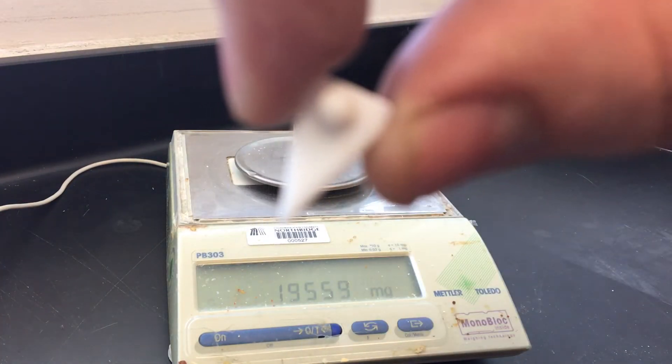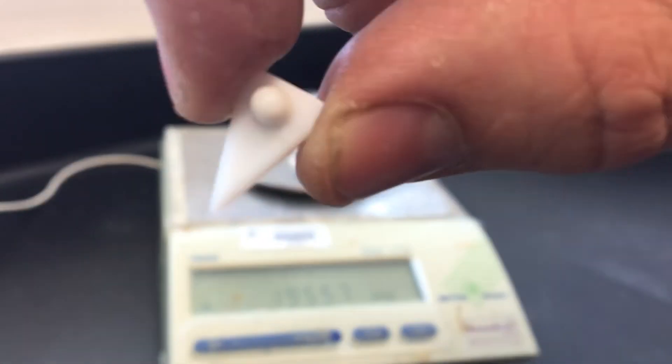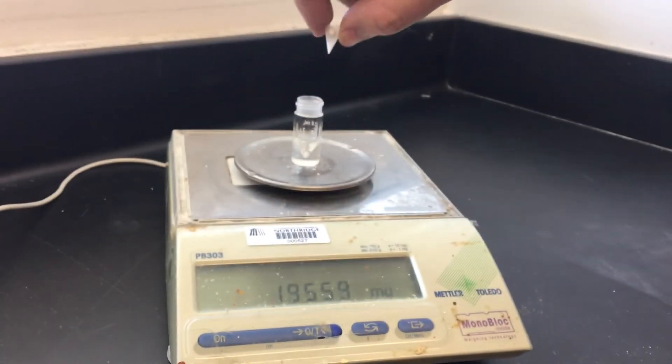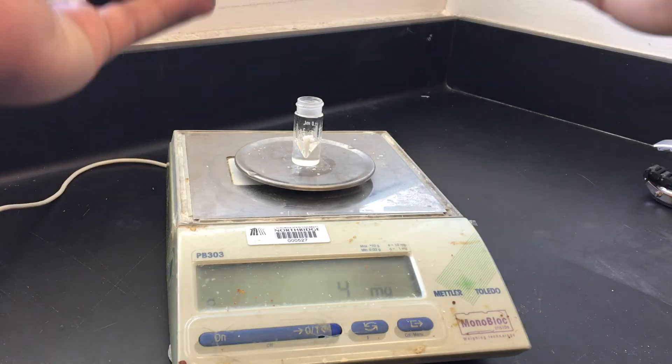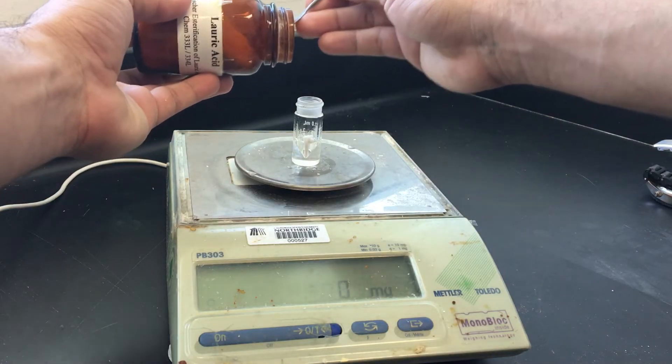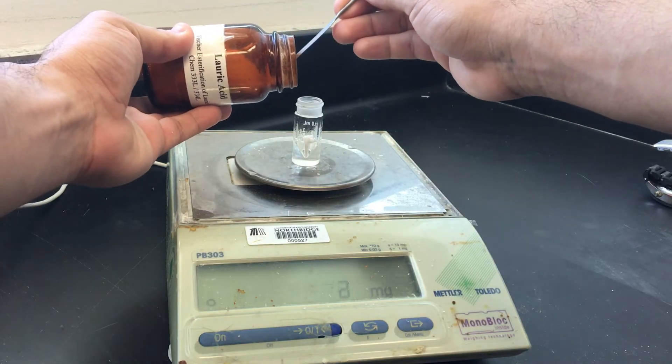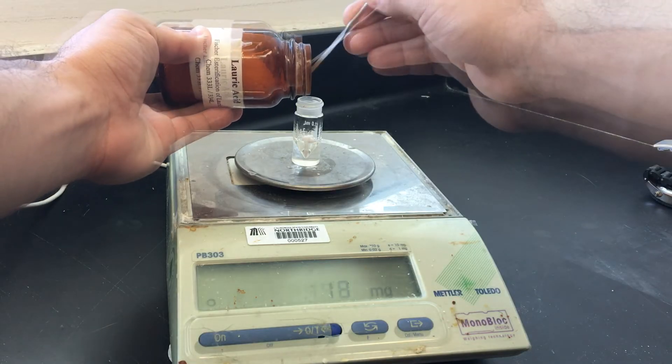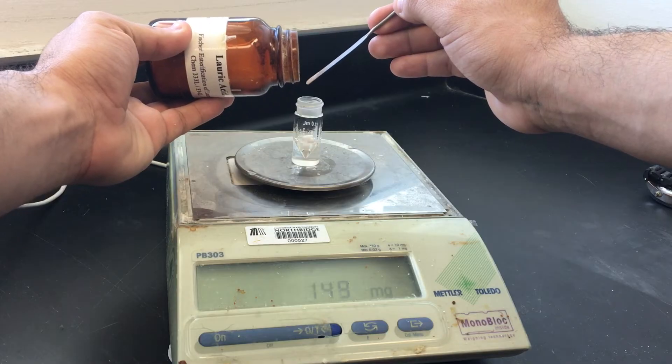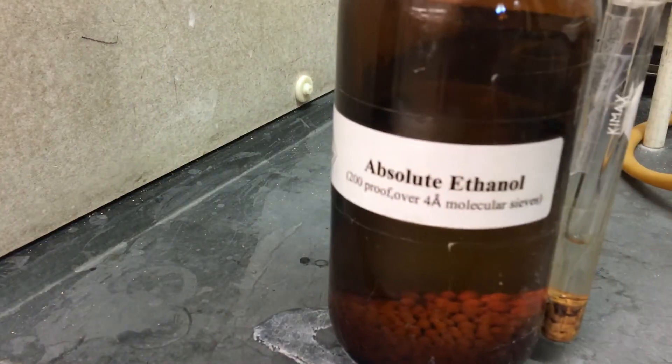Before I measure out my lauric acid, I'm going to put in my spin vane. That's a little triangle spinner right here. You always want to have it point down with the little knobs up top. Now, in case you haven't seen it before, the easiest way to measure out an exact small amount of powder is to hold the container right above the flask and scrape it out using a spatula. Just like this. Once you've reached your target amount, make sure to write it down before you forget.